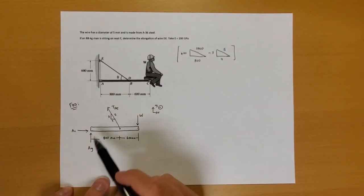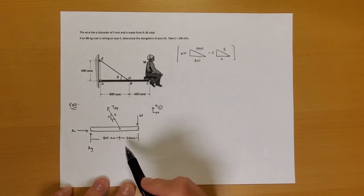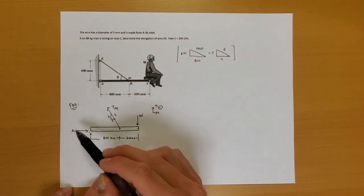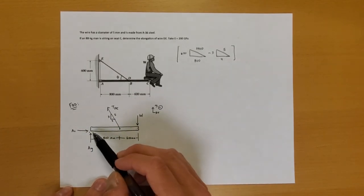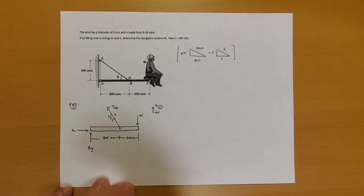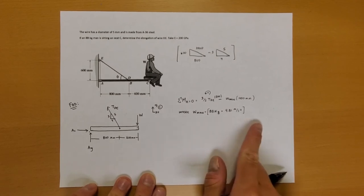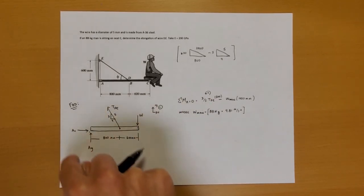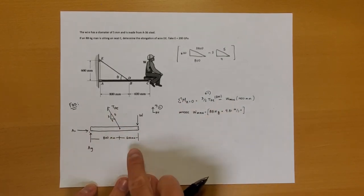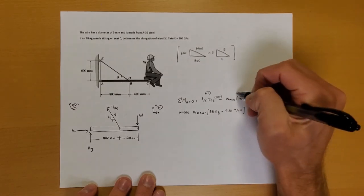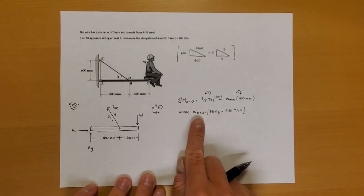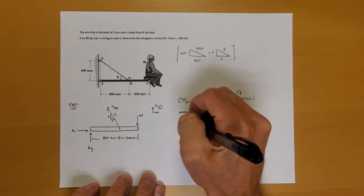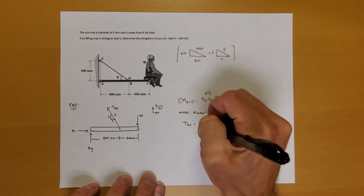With the free body diagram of beam ABC, we take the sum of moments about point A to solve for tension TDE — because at point A we eliminate two unknowns AX and AY, leaving only TDE and the known weight W. The moment equation gives us: three-fifths TDE times 800 mm counterclockwise, minus the weight of the man times 1400 mm clockwise equals zero. The man's weight is 88 kilograms times 9.81 meters per second squared. Completing this calculation, the tension in rope TDE equals 2518 newtons.